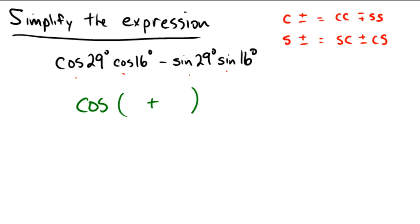The two angles are the two numbers that we see floating around, so it's 29 degrees plus 16 degrees. 29 plus 16 is of course 45, so this question is really just asking for the cosine of 45 degrees, which we know from our unit circle to be √2/2. So the final answer to this problem is √2/2.